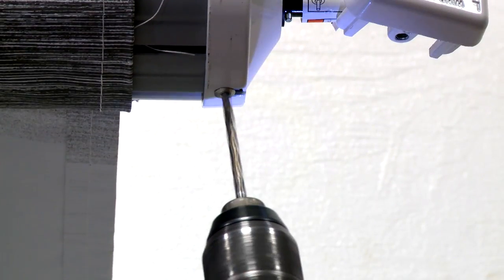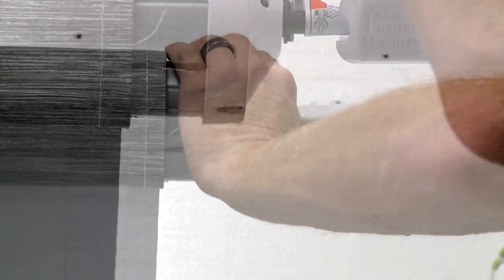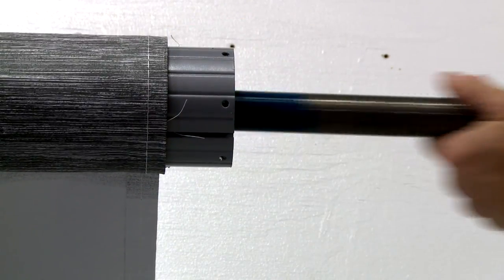Using an appropriately sized drill bit, drill out the rivets securing the end cap to the roll tube. Remove the end cap and spring assembly from the roll tube.